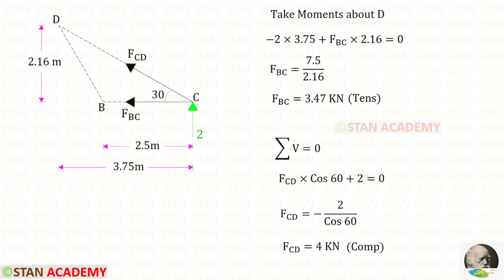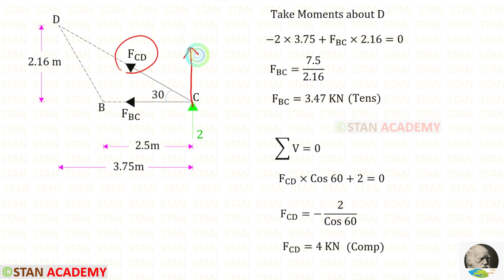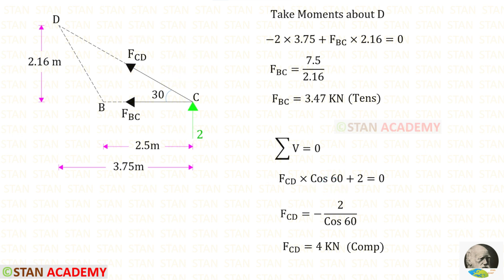Now let us apply the rule sigma V is equal to 0. 2 is acting upwards so that it will be positive. FCD is inclined — we have to make it vertical, and to do that we need 60 degrees. Since it is acting upwards it will be positive and we have to multiply with cos 60. For FCD we will get a negative value, which means it is compressive.